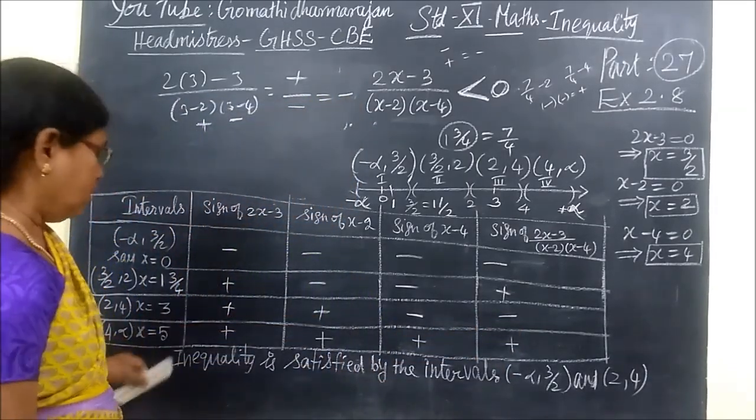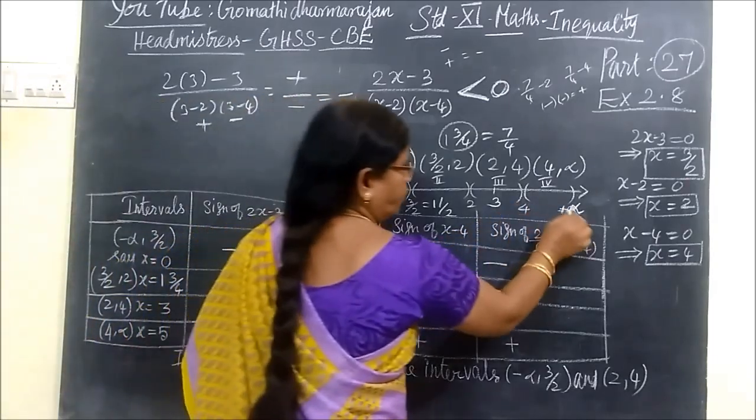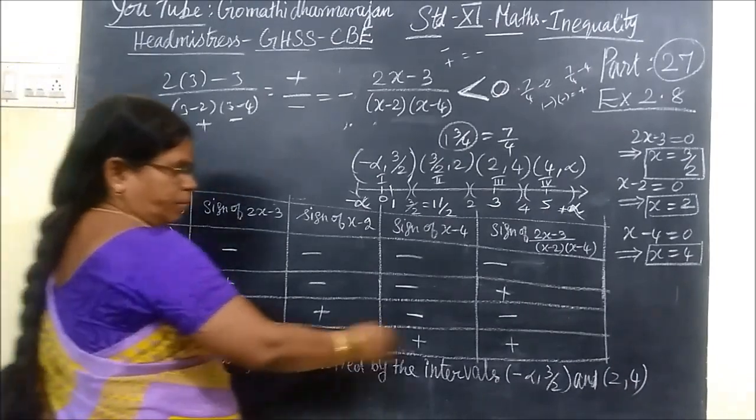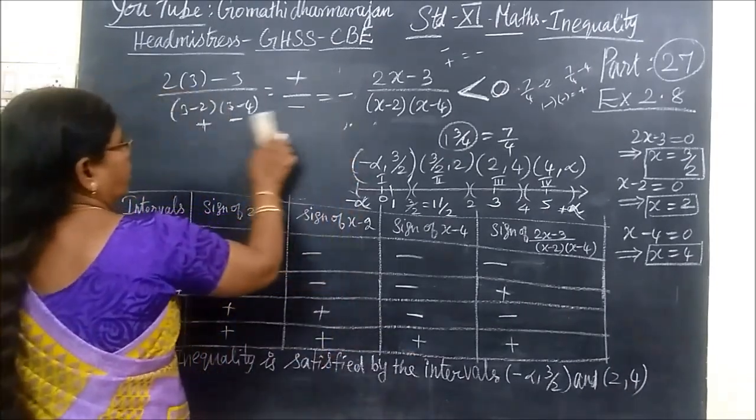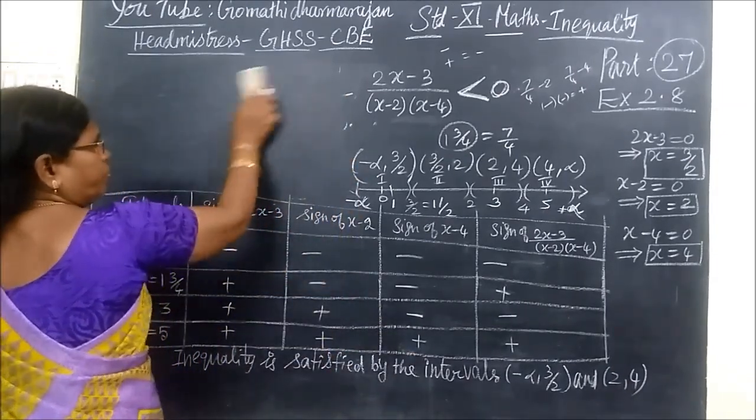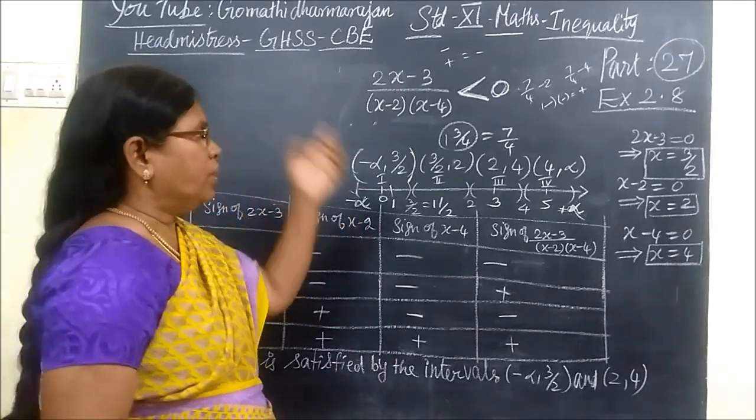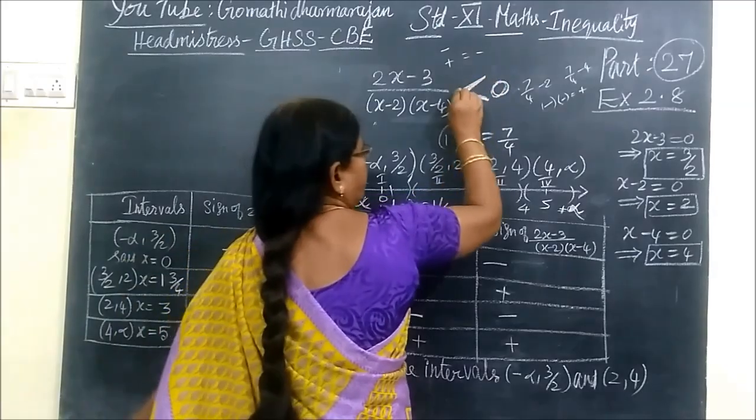Similarly, the next interval, 4 to infinity. You can take 5. When you take 5, everything will be plus only. According to the sum, we are going to find the critical value that is less than 0. Less than 0 is negative.